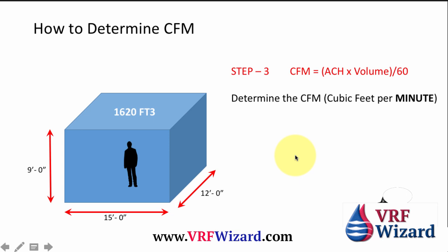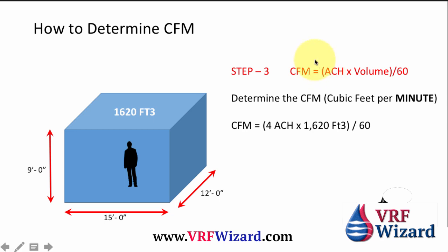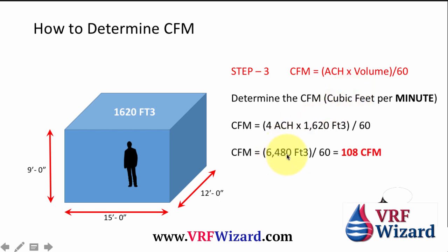Step three: determine the CFM, which is cubic feet per minute. Everything we've done so far has been per hour — air changes in an hour. Now we need to get that down to the minute by dividing by 60. CFM equals air changes times volume, divided by 60. So here we have four times the volume of the room — 6480 cubic feet — divided by 60 minutes in an hour. In this case, that's 108 CFM, which is equivalent to four air changes per hour for this size room.